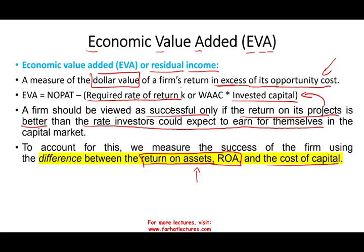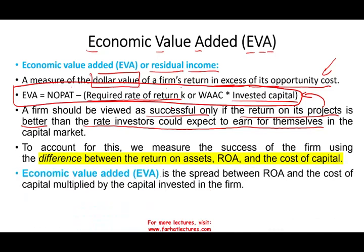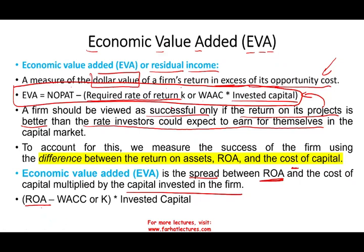We're going to use percentages to find out the dollar amount. The formula is: take ROA, subtract the cost of capital — either WACC or K, the required rate of return — and then multiply by the invested capital. That spread between ROA and cost of capital, multiplied by invested capital, gives us EVA. This is the formula used in investment textbooks for this course.